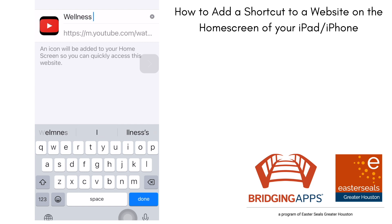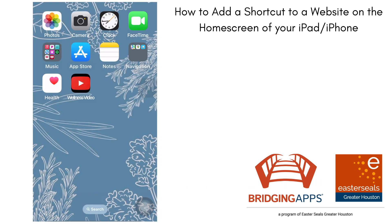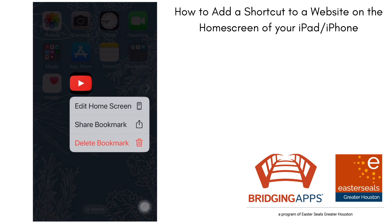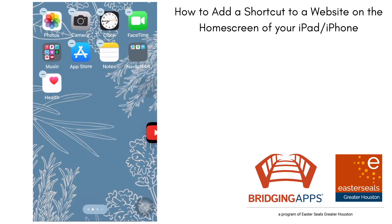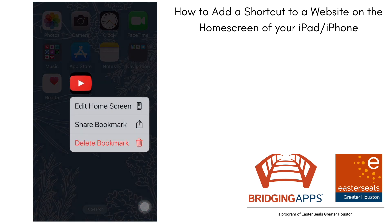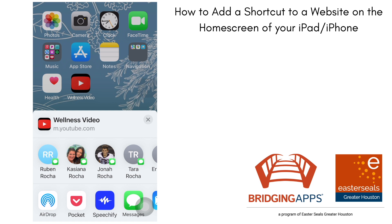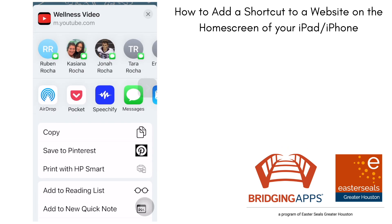I'm going to click Done and now the video is saved to my home screen. I have a couple of options. Once I hold down that new red icon that looks like a YouTube symbol because it's a shortcut to YouTube, I can move it around on my home screen, I can share the bookmark by text so that someone else can save it, or I can also delete the bookmark.